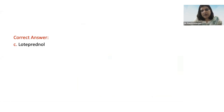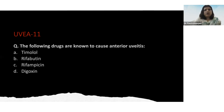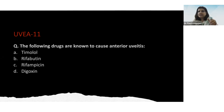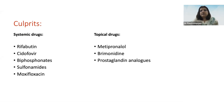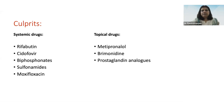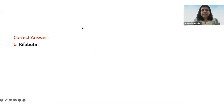Question: which drugs are known to cause anterior uveitis? Systemic drugs causing uveitis include rifabutin, cidofovir, bisphosphonates, sulfonamides, and moxifloxacin. Topical drugs include prostaglandin analogues, brimonidine, and metipranolol. Among the given options — timolol, rifabutin, rifampicin, digoxin — the correct answer is rifabutin. This question has appeared in past three or four exams, so knowing this battery of uveitis-causing drugs is important.